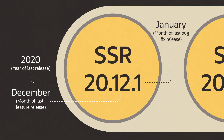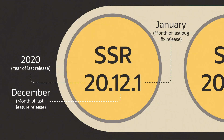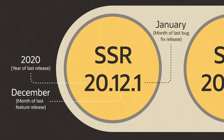For example, in January 2021, the version would be 20.12.1. The one here indicates it's the January update to the December 2020 release.